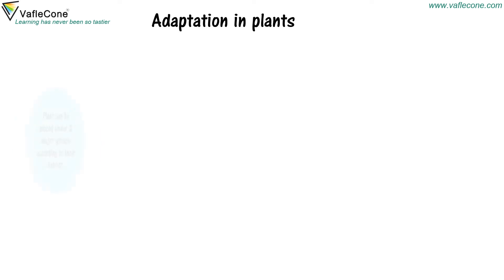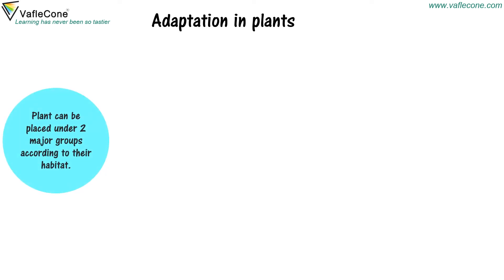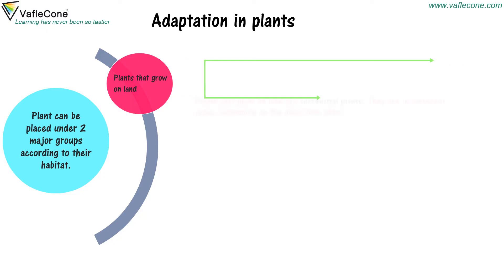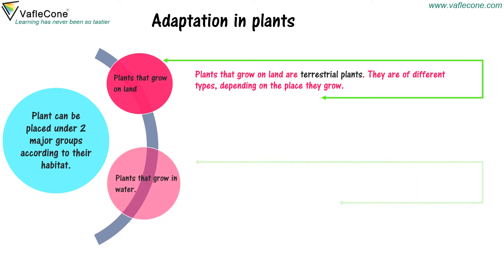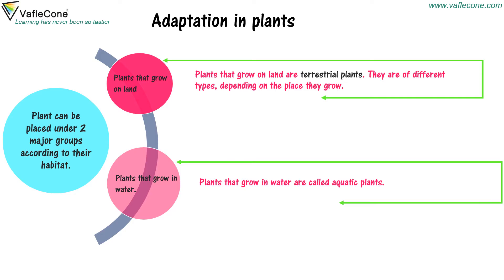Plants can be placed under two major groups according to their habitat. Plants that grow on land are called terrestrial plants. They are of different types depending on the place they grow. Plants that grow in water are called aquatic plants.